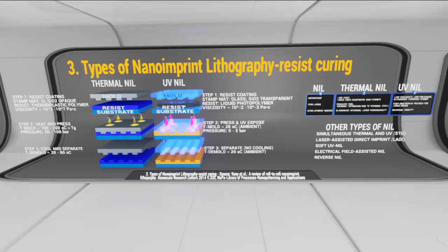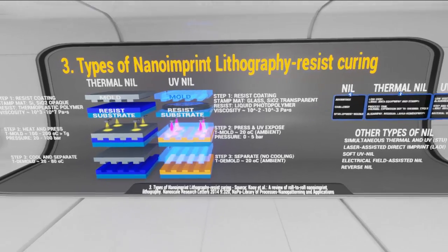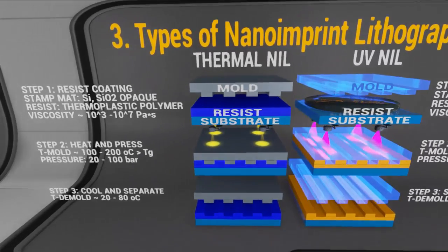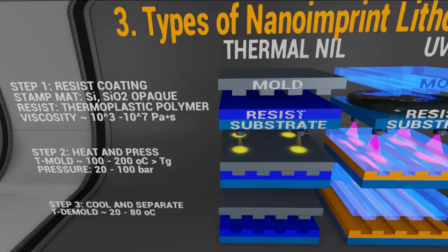Now we will see a simplified process of thermal and UV NIL. The thermal NIL, also known as the hot embossing process, is the earliest type of NIL introduced by Professor Chou, which involves imprinting onto a thermally soft thermoplastic polymer resist. A typical thermal NIL process is as follows: a mold is first heated up to an elevated temperature higher than the glass transition temperature Tg of the thermoplastic polymer resist used. As the heated mold comes in contact with the resist, the resist will be heated up and softened into a molten state, where it will fill in the mold cavities under sufficient imprinting pressure and time.